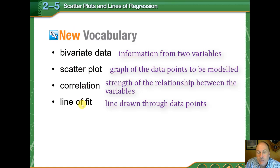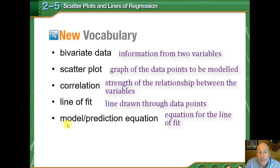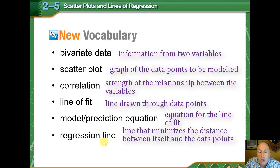A line of fit is an attempt to draw a linear equation through the data such that it fits the data, and then a model or prediction equation is the actual equation for that line. It need not be a line, but we're going to be talking about lines today. The regression line is a statistical process that minimizes the distance between the data points and the line itself.